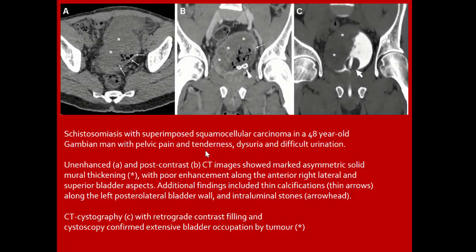Schistosomiasis with superimposed squamous cell carcinoma: unenhanced and post-contrast CT shows marked asymmetric mural thickening with poor enhancement along the anterior, right lateral, and superior bladder aspect. Additional findings include thin calcification in the left posterolateral bladder wall and intraluminal stones. CT cystography with retrograde contrast filling shows extensive bladder occupation by tumor.